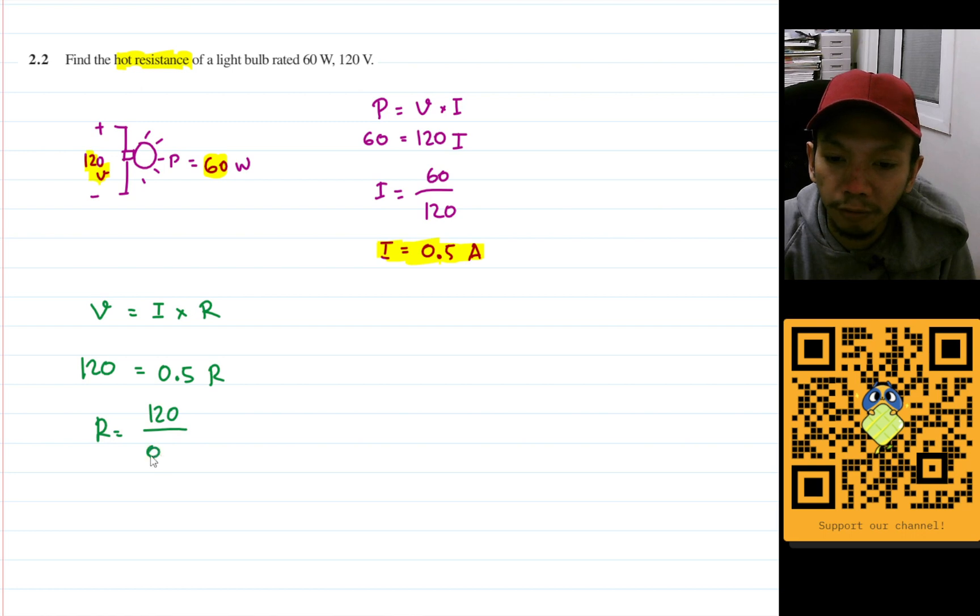My fried brain... Okay, so I will have 120 divided by one-half, or that's equivalent to 120 multiplied by 2. And so we will have R is equal to 240 ohms. Yeah, that's it.